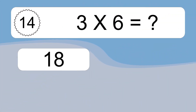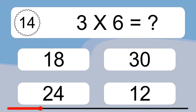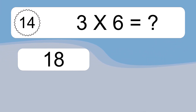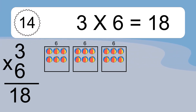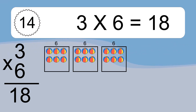Three times six equals what? Three times six equals 18. We have three boxes and each box has six colorful balls inside. If you count all the balls in all the boxes together, you will have three times six balls. This equals 18 balls.